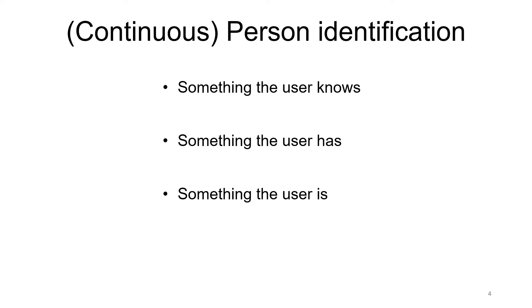Person identification can be done using three different methods. Something the user knows, which can be a password. Something the user has, token for example.